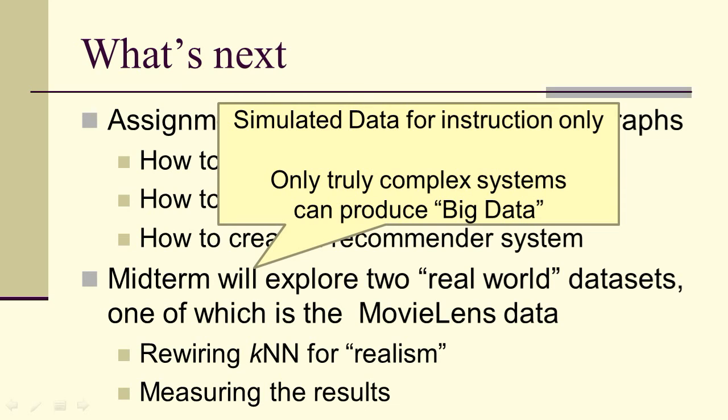Why are we not going to do this with the small town zoo? Because it's simulated, and therefore it's good for instruction only. One thing we learned very quickly in the computational science data scientist community is you can't really simulate big data. Only truly complex systems—complexity meaning highly nonlinear, a mixture of regular and chaotic motion, and an extremely large number of degrees of freedom like 10 to the 54th or 10 to the 23rd—only these systems can produce what we would actually call big data. The MovieLens data is big data, but the simulated data is not going to have the properties that real world big data sets have.